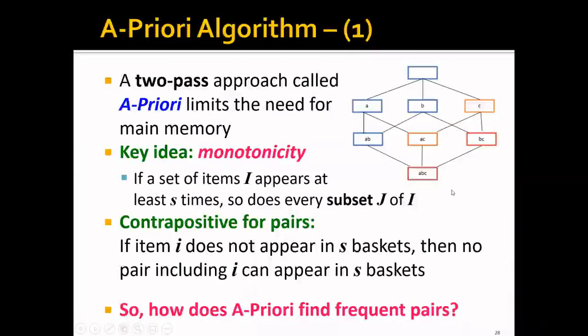And the A-Priori algorithm is a two-pass approach that limits the use and needs for main memory. And the key idea is monotonicity. And it's actually a very simple but clever idea. And it states that if a set of items I appear at least S times, so does every subset J of I. And basically, that means that if the support of I is at least S, then so is the support of the subset J of I.